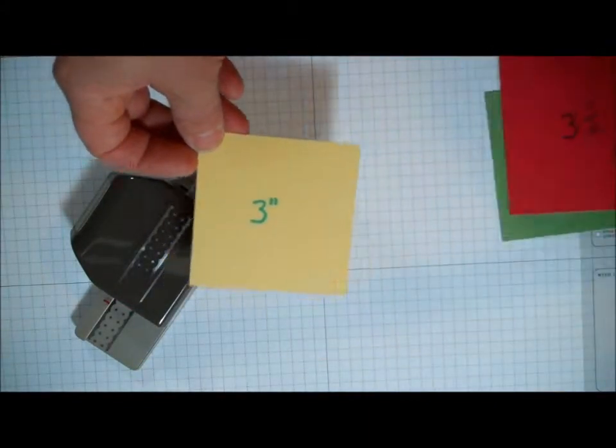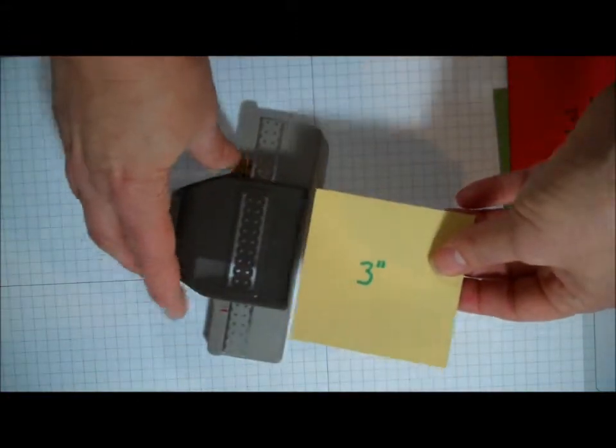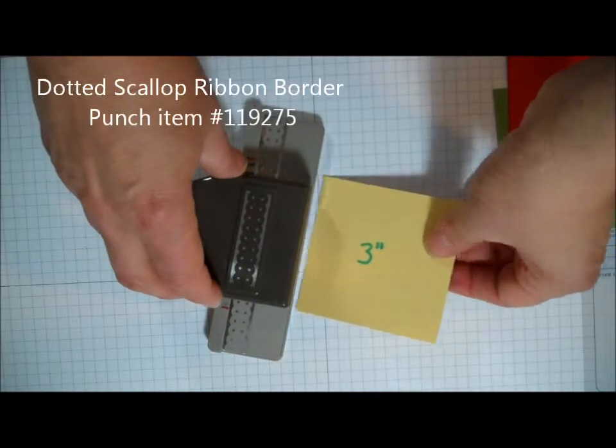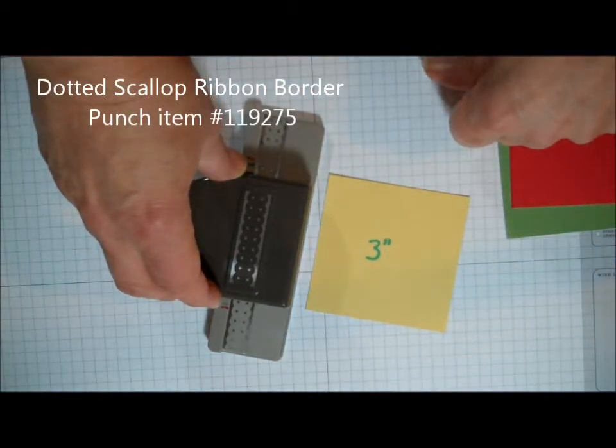To make the medallion, you want to center your piece of paper in the punch and simply rotate it 90 degrees each time so you're stamping once on each edge.